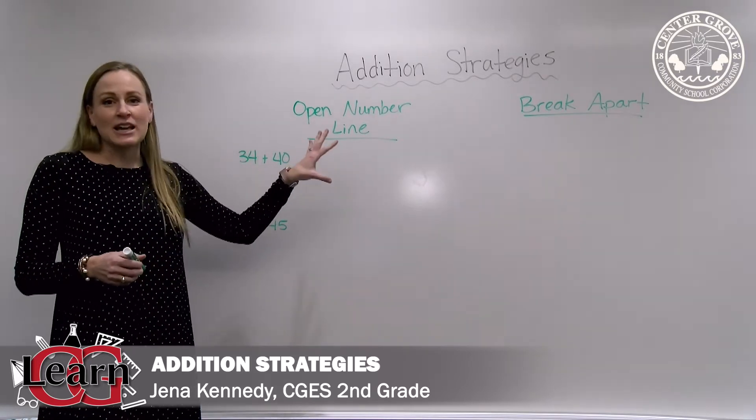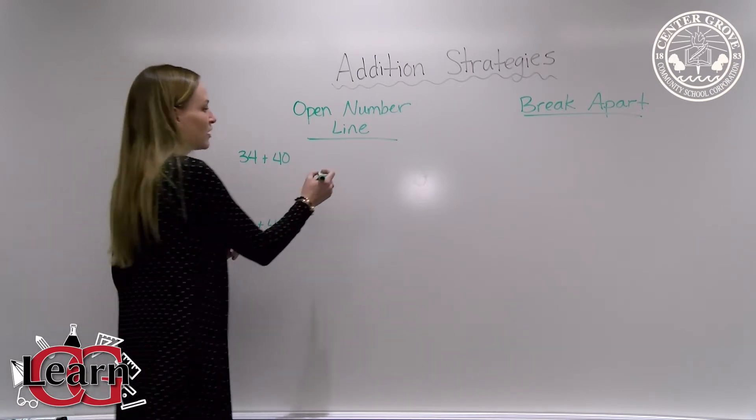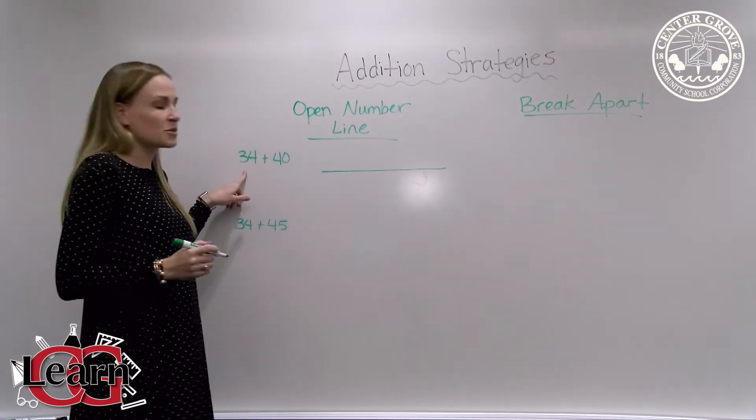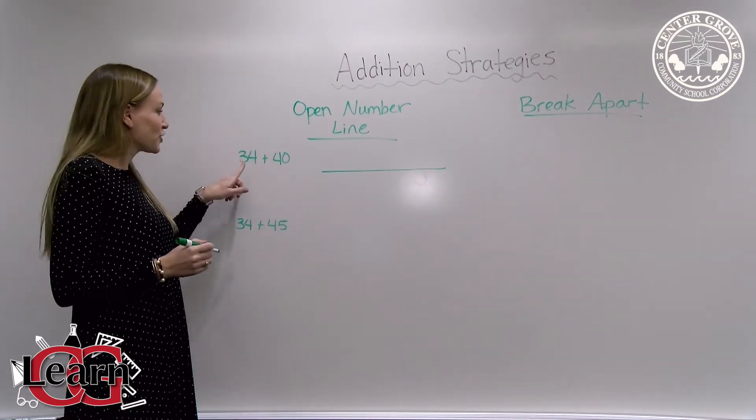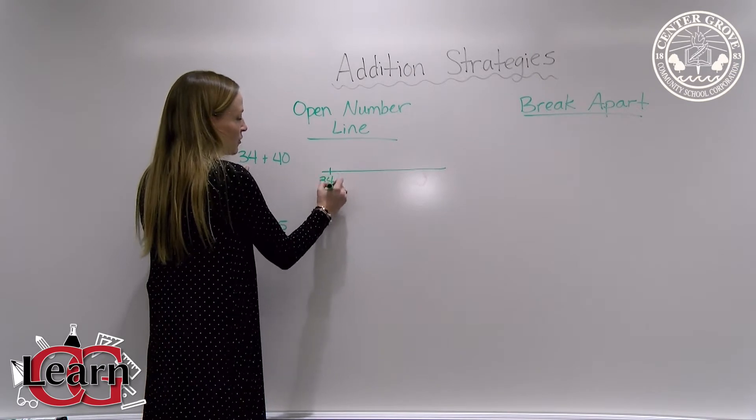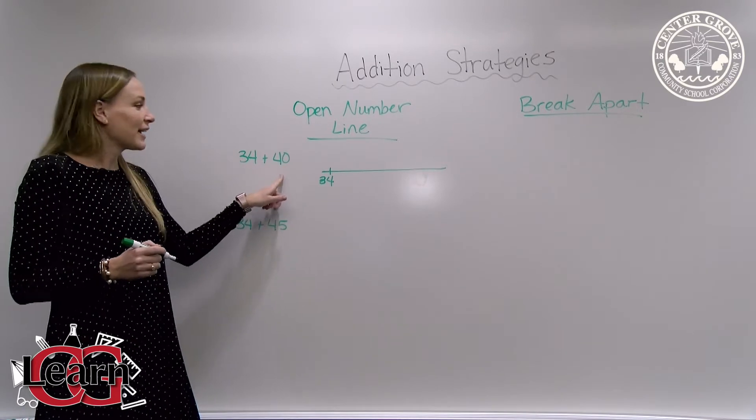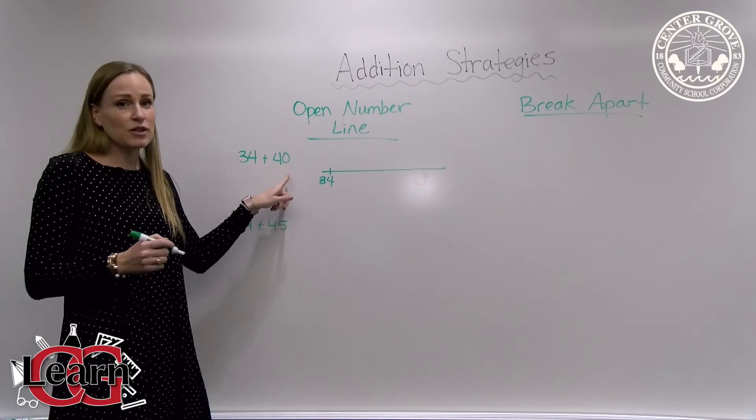The first strategy is using an open number line. You're going to draw a straight line and look at your addition problem. You'll pick your first number, so draw a little dash and write 34. Since we're adding 40, we're going to do tens jumps and count by 10s until we reach 40.